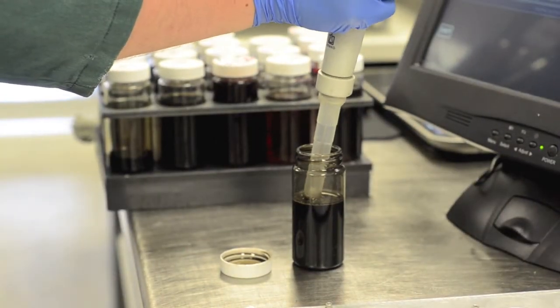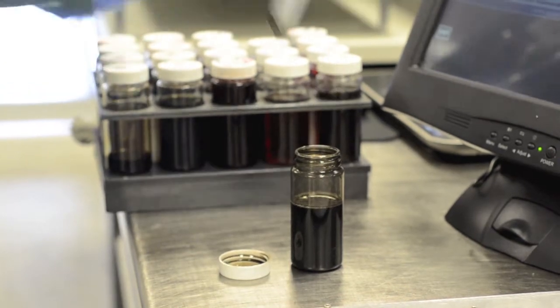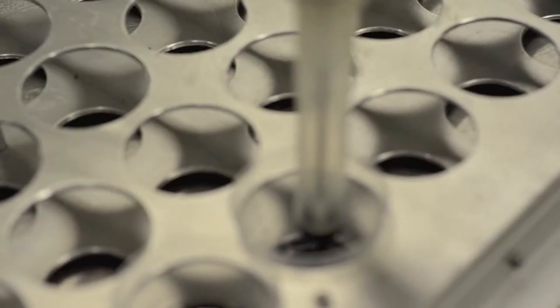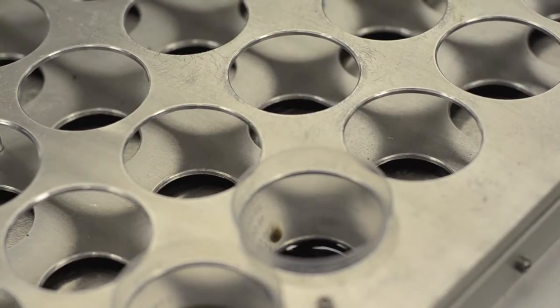For samples with extreme amounts of contamination, a single channel pipetter can be used to accurately dispense as little as one half of a milliliter of sample to produce a dilution ratio of 60 to 1.